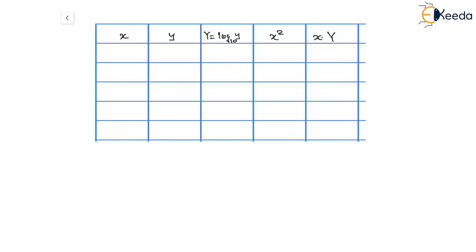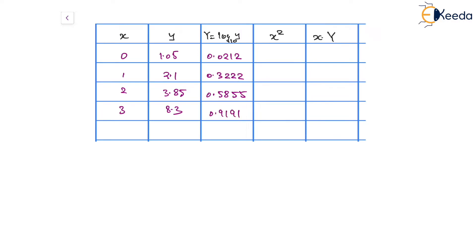The y values are given as 1.05, 2.1, 3.85, and 8.3. The log values of y will be 0.0212, 0.3222, 0.5855, and 0.9191. The x square values come out to be 0, 1, 4, and 9. And x times Y will be 0.3222, 1.1709, and 2.7572.